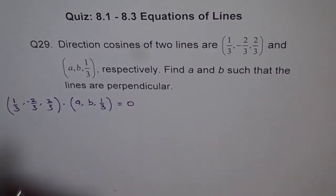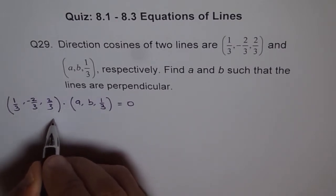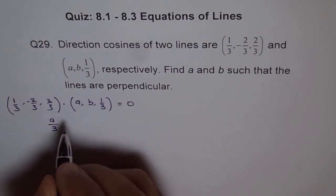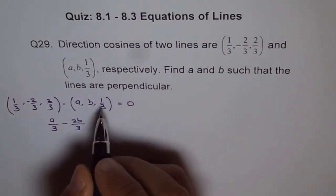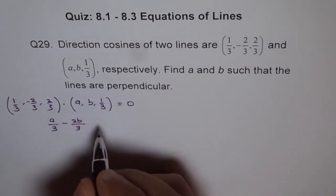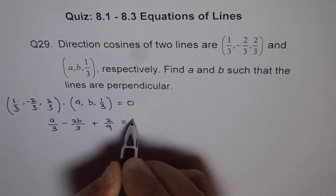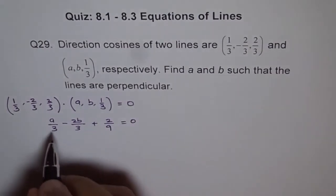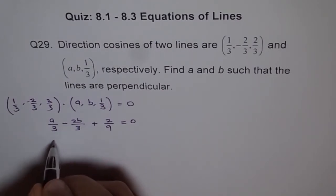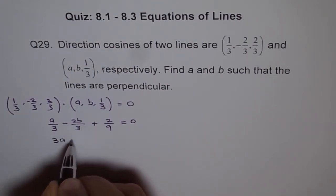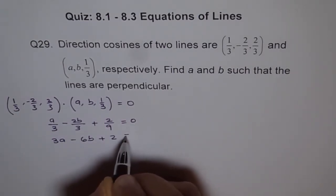Let's multiply this and see what we get. A times 1/3 is A/3, B times -2/3 is -2B/3, and 1/3 times 2/3 is +2/9, equals 0. We can multiply through by 9 and get 3A - 6B + 2 = 0.